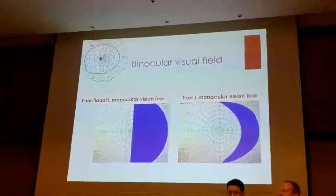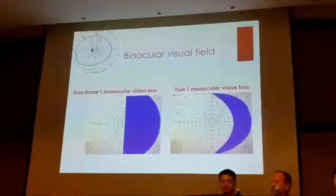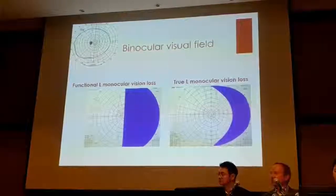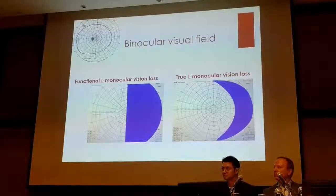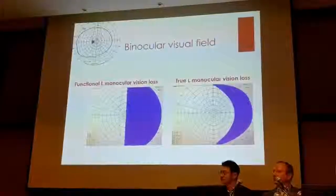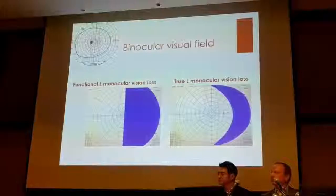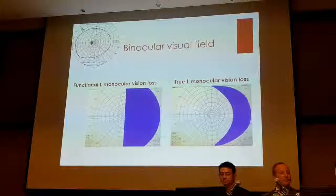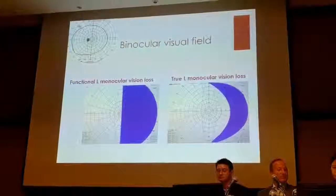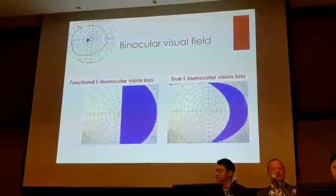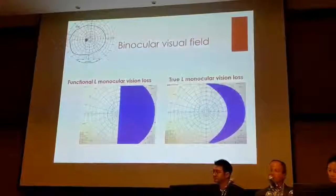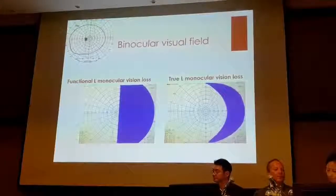A person's visual field normally extends 60 degrees nasally, 70 degrees inferiorly, and 90 degrees superiorly and temporally. If a person truly has monocular visual loss, the visual field should show only a small temporal crescent. However, if they have functional visual loss, they think, 'I'm not supposed to see out of my left eye.' So when you do a confrontation visual field, you see a binocular visual field that respects the vertical midline — which makes you suspicious.